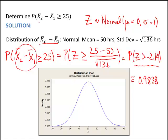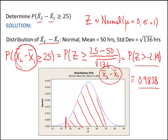So the probability that the mean lifetime X-bar₂ minus X-bar₁ is greater than 25 hours is quite likely — around 98%. Looking at the picture of the distribution of X-bar₂ minus X-bar₁, 25 falls well to the left of the mean of 50, and we're finding the area to the right of 25, which is this large shaded region equal to 0.9838.